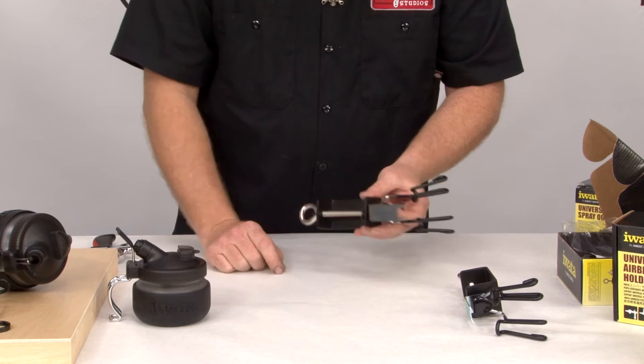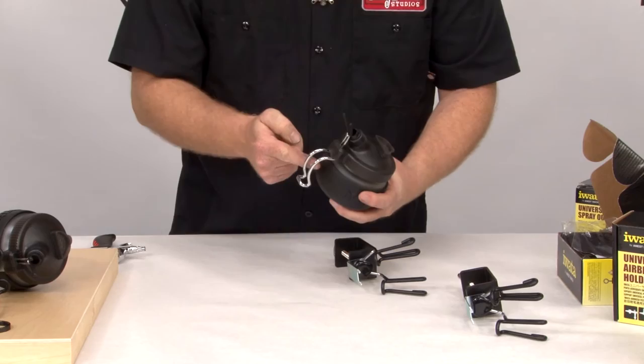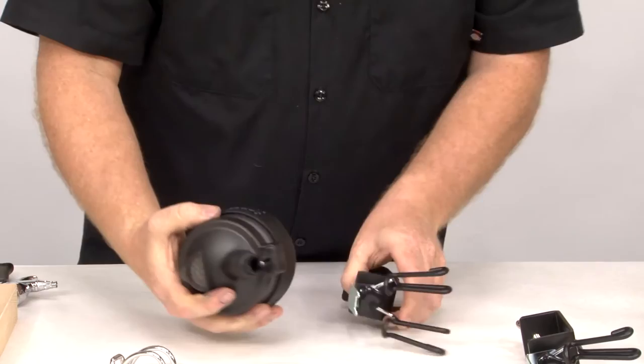If you're wondering what the spray-out pot mounting bracket is for, I'll show you right now. We have the handle on the bottom of the spray-out pot. Remove that handle - that's just for when it sits on its own - and slide it right onto that bracket.